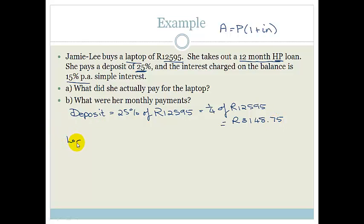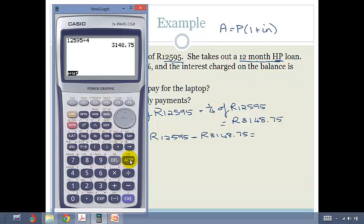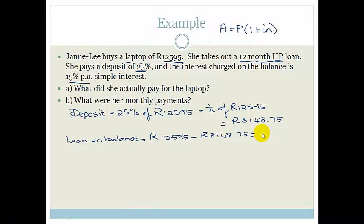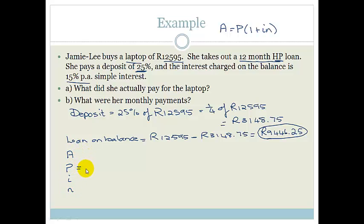That means the loan is on the balance — what she's still owing — which is 12,595 minus 3,148 Rand and 75 cents. So we calculate 12,595 minus 3,148.75, and that gives us 9,446 Rand and 25 cents. That is how much her loan is for — the principal. So P equals 9,446 Rand and 25 cents.